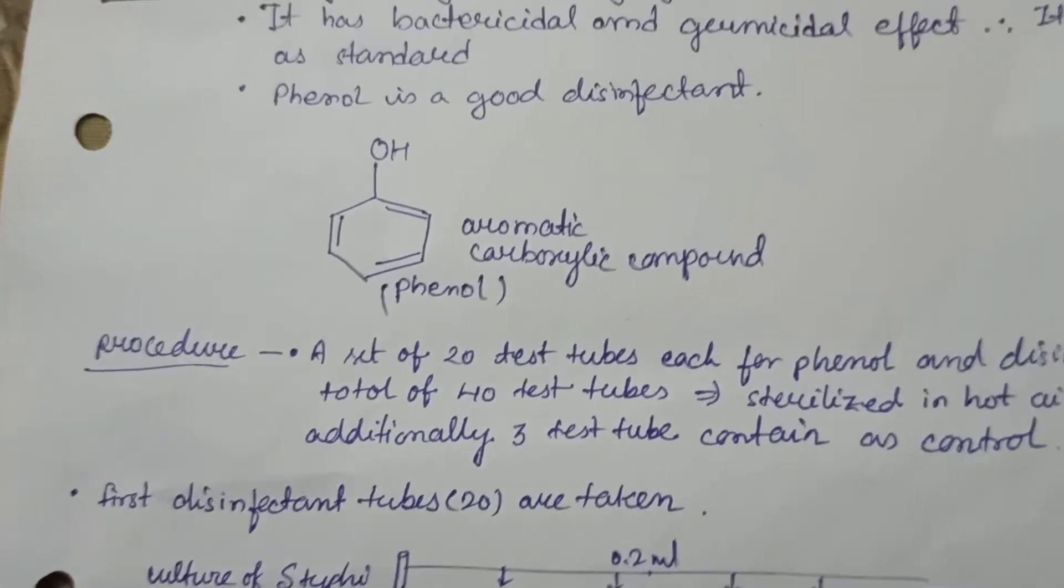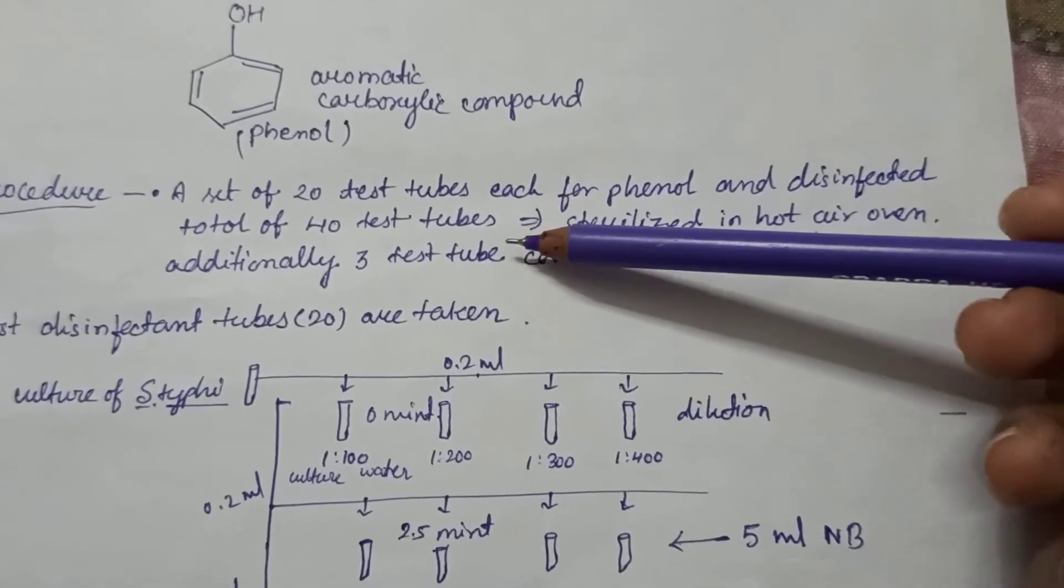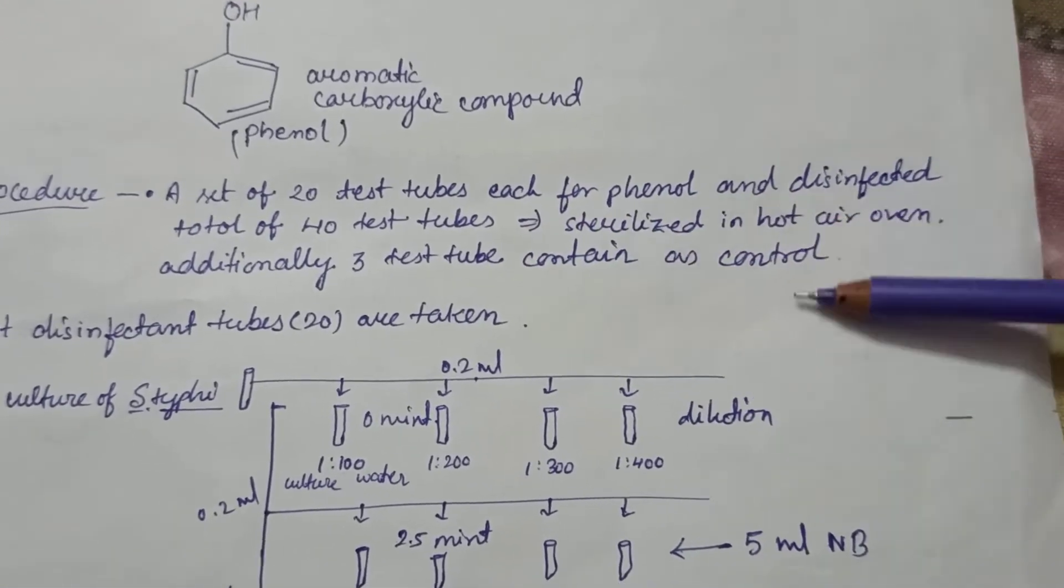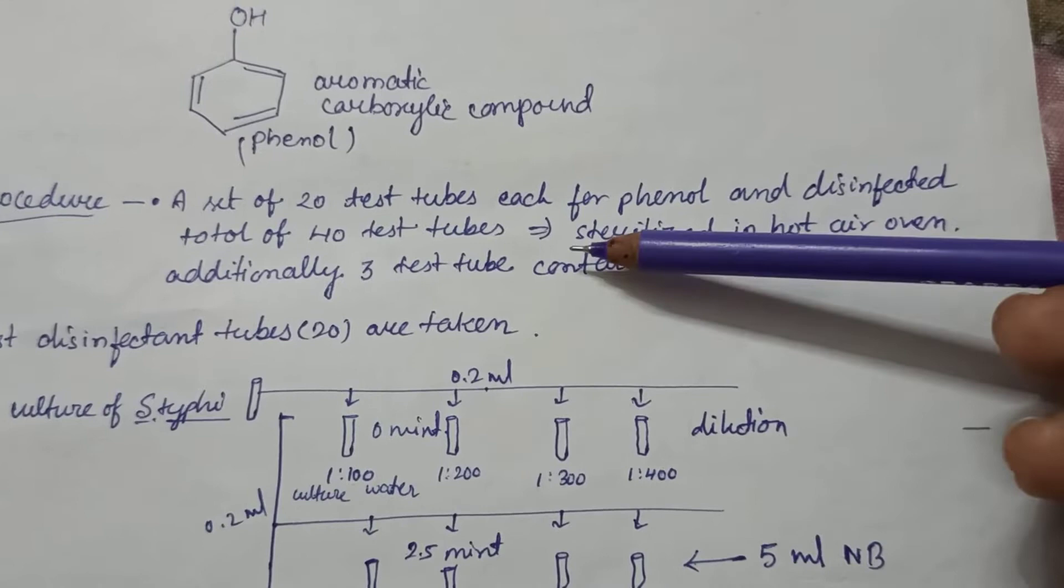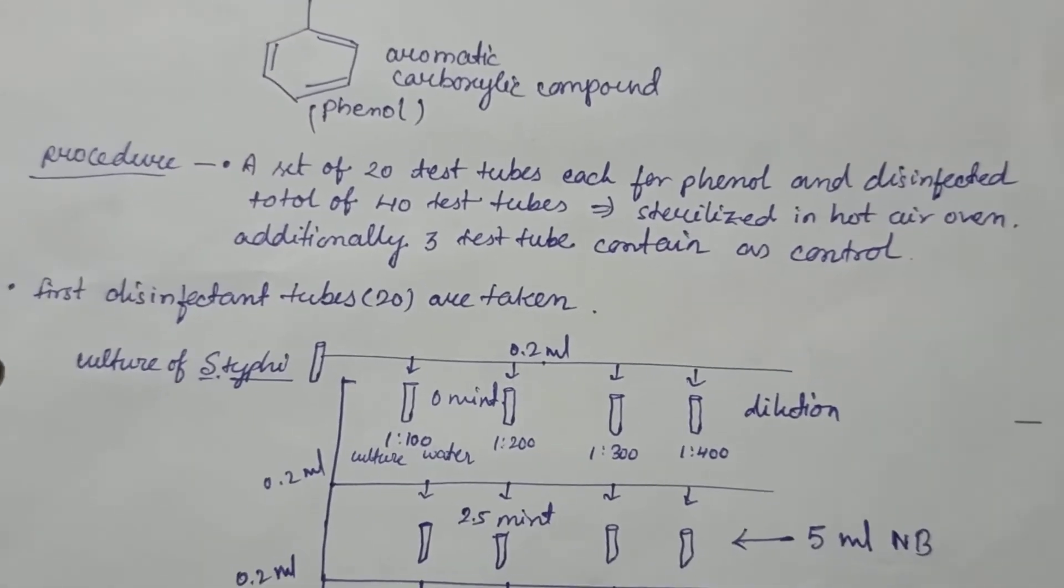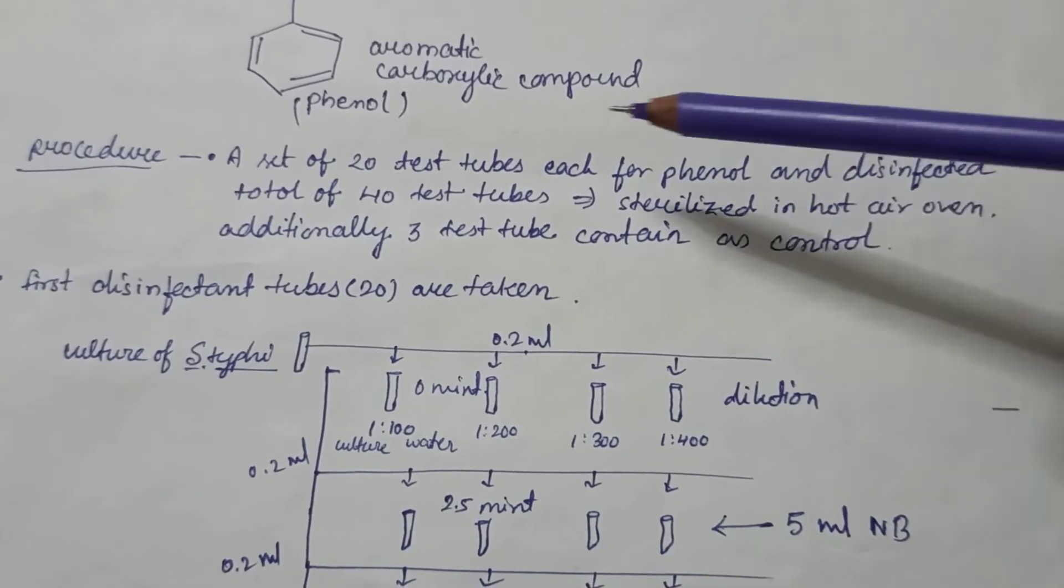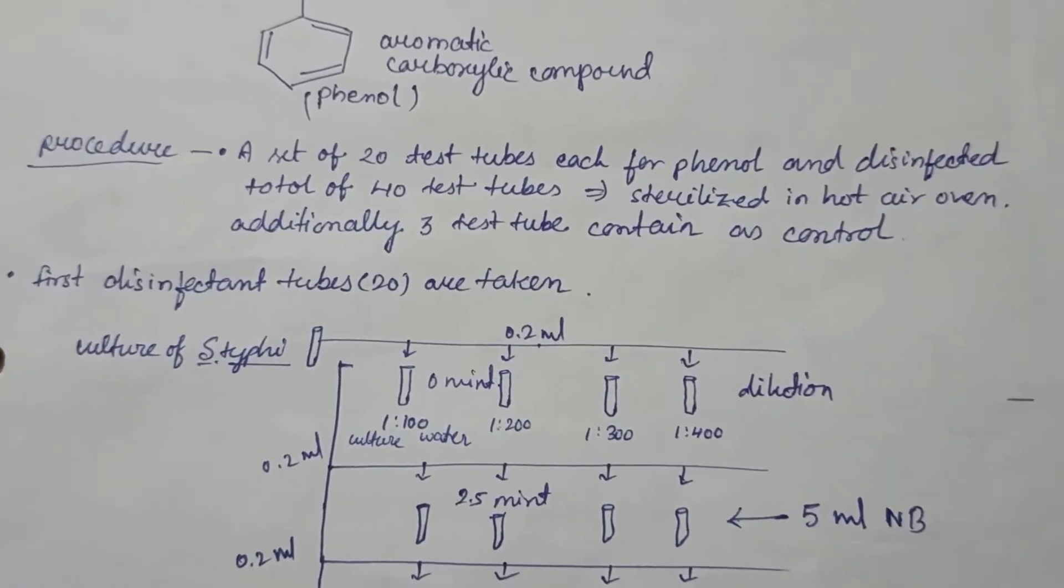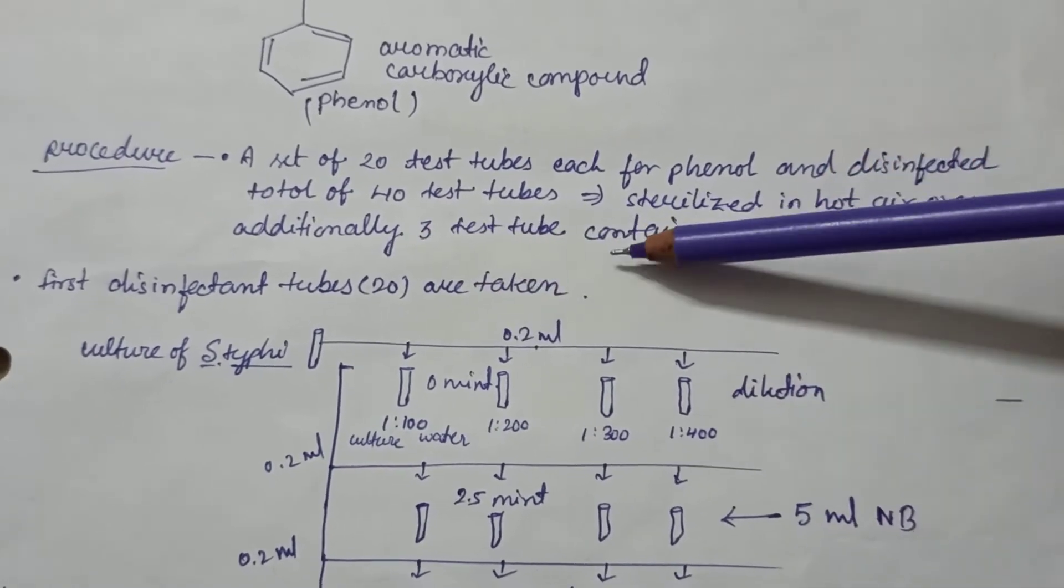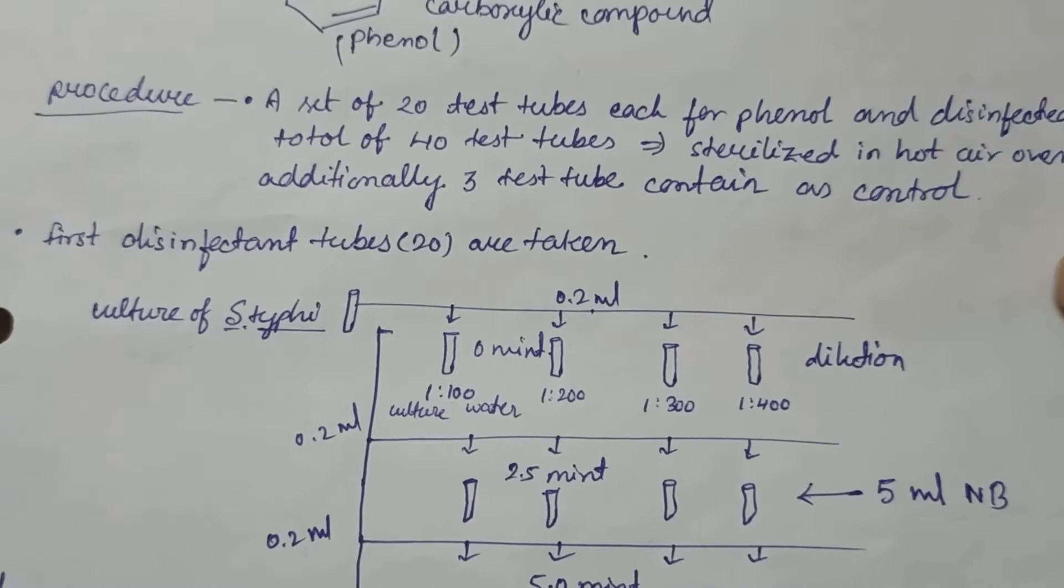As a disinfectant, phenol can disrupt the membrane and can denature the protein. In the procedure, we see a set of 20 test tubes each for phenol and for disinfectant, a total of 40 test tubes are prepared that is sterilized in hot air oven by dry heat.